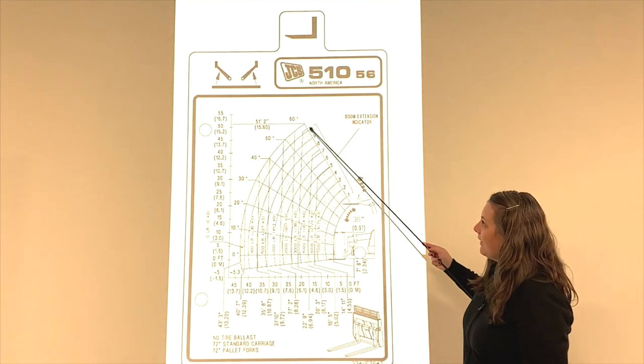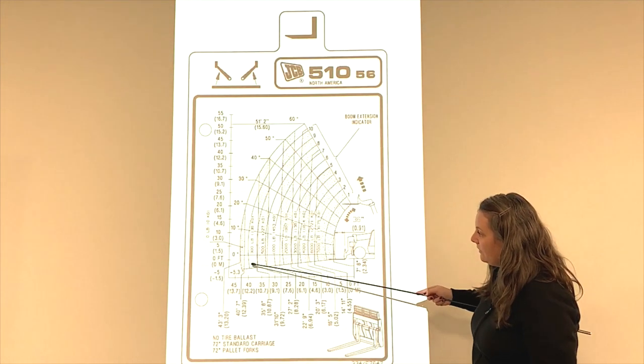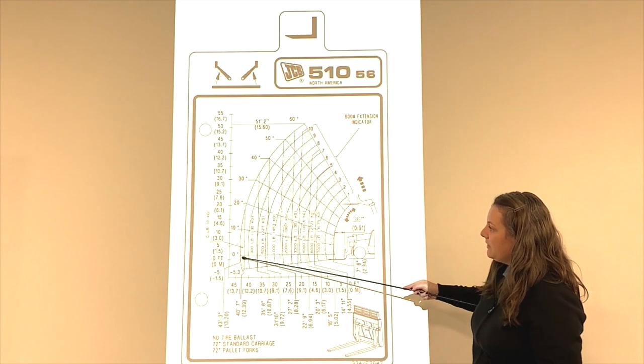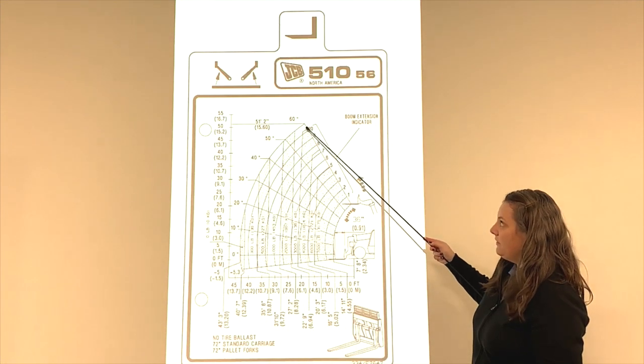Next, you're going to have the boom angle indicator. Here on the edge, you can see the arc. And on this machine, it goes from zero degrees all the way up to 60 degrees.